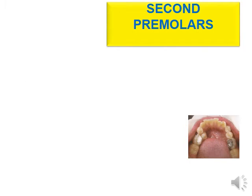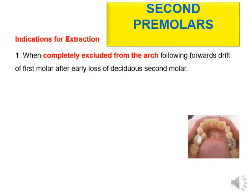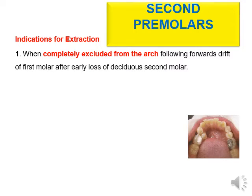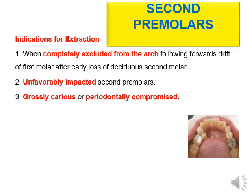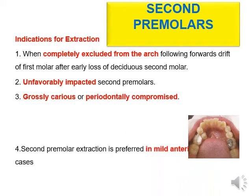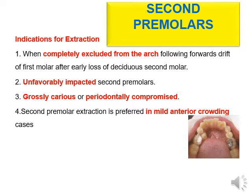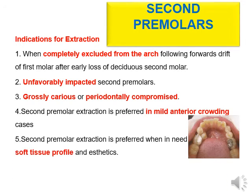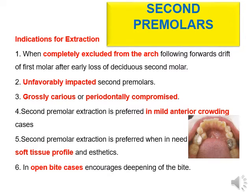Extraction of second premolars: indications include when they are completely excluded from the arch following forward drift of the first molar after early loss of the deciduous second molar; unfavorably impacted second premolars; grossly carious or periodontally compromised teeth. Second premolar extraction is preferred in mild anterior crowding cases and when soft tissue profile and aesthetics require it. In open bite cases, it encourages steepening of the bite.